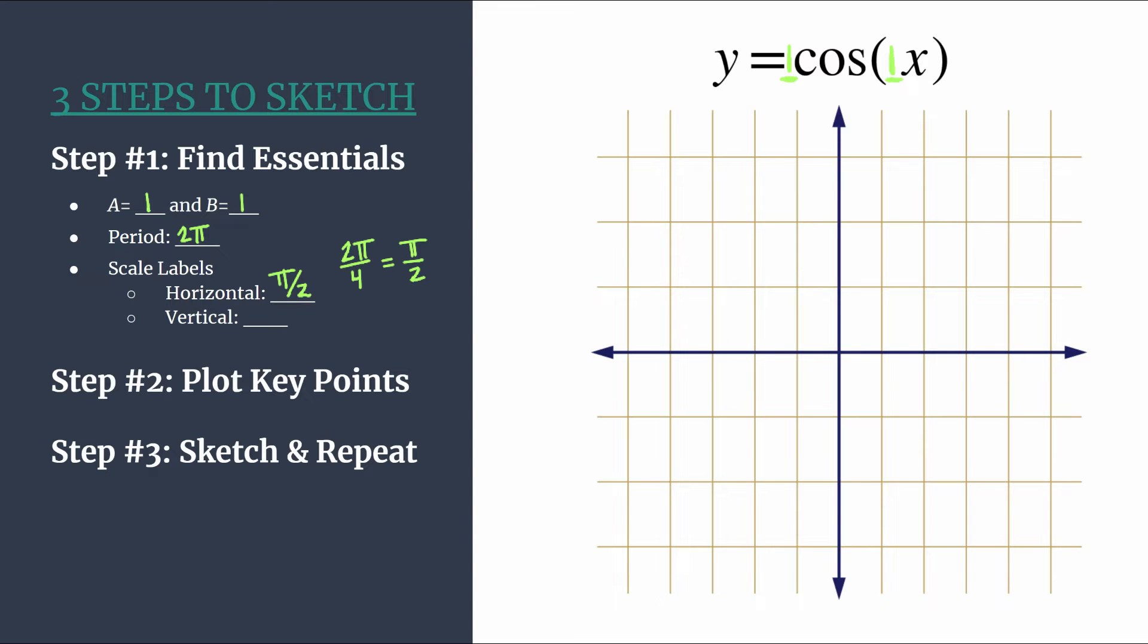So every horizontal tick mark, we will be counting by pi over two. And then for this method, we like to use a as our vertical scale. So each unit here, we will count by one. So we have all this essential information, let's go ahead and label our axes. And then we'll be able to move on to step two. So let's start with our horizontal scale. We know we're counting by pi over two. So if it helps count one pi over two, two pi over two, which reduces to pi, three pi over two, four pi over two. And your fourth tick mark should always match your period. So the fourth label should be equivalent to your period when we use this method.